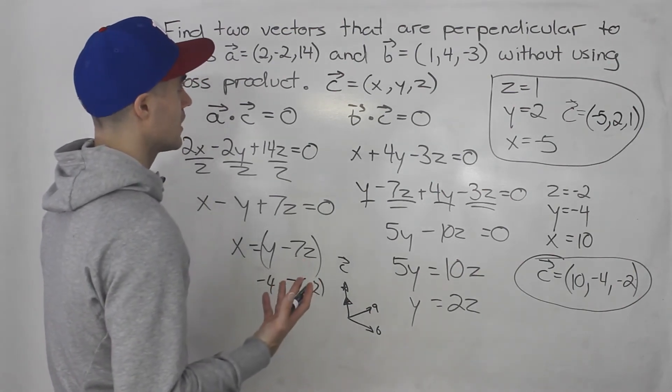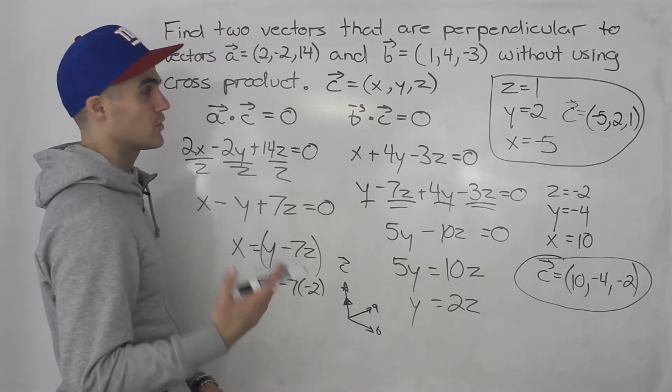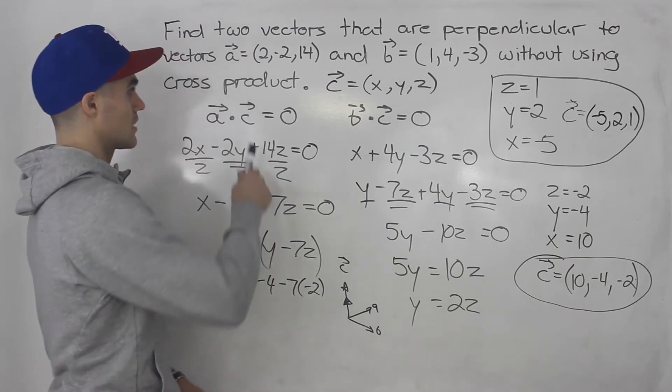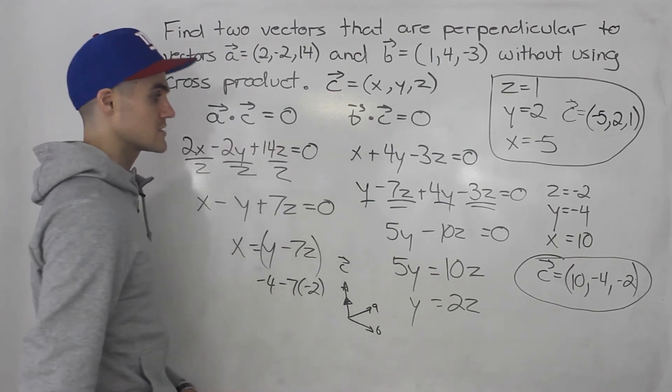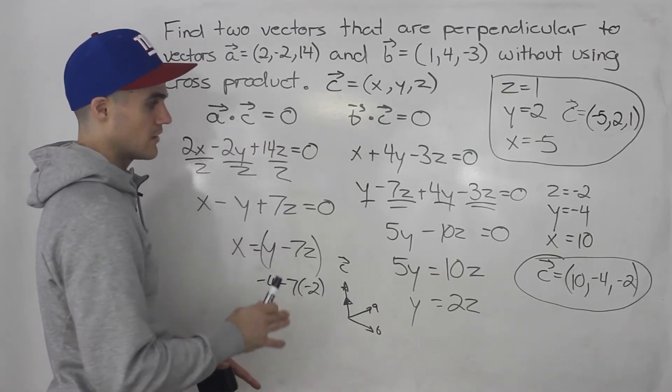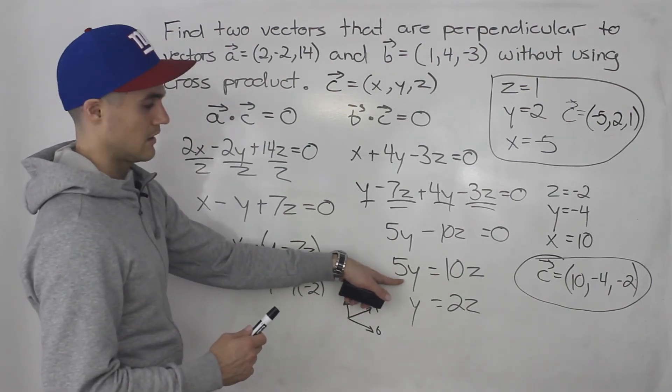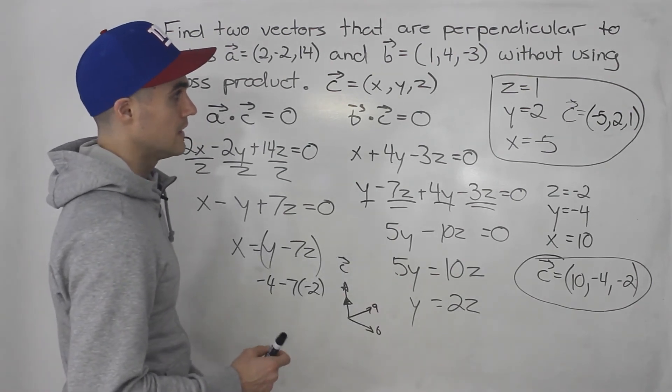So without using the cross product, you can always find perpendicular vectors. You just got to make sure the dot product is equal to zero. And then you got to do some algebra and we get to this case here. And then we can pick an infinite amount.